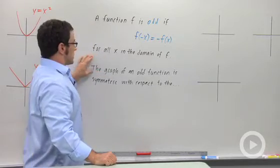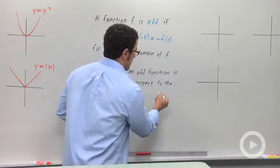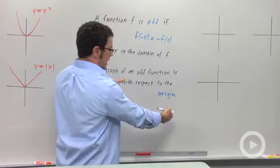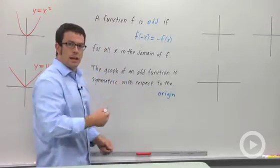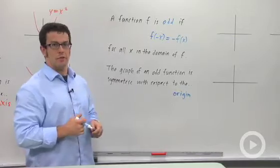Now, if this is true, the graph of an odd function will be symmetric with respect to the origin. What that means is, you could take the graph, rotate it 180 degrees, and it'll look exactly the same. So it's 180 degrees symmetry about the origin.